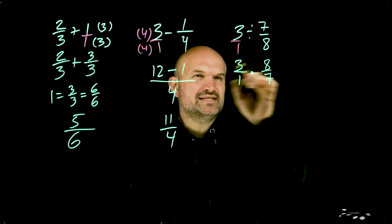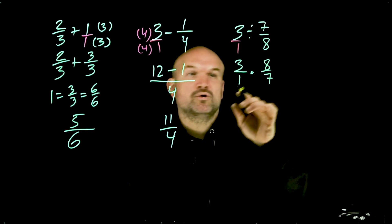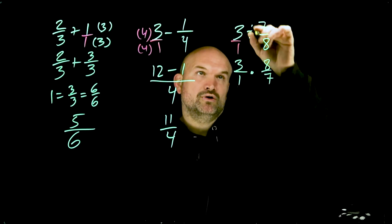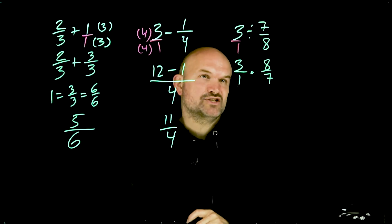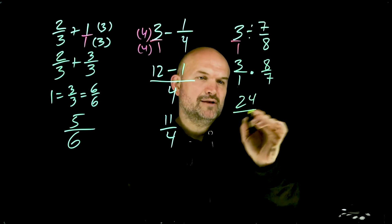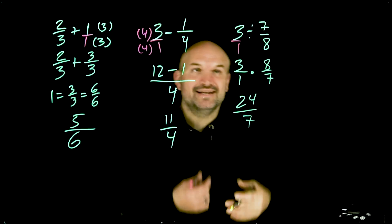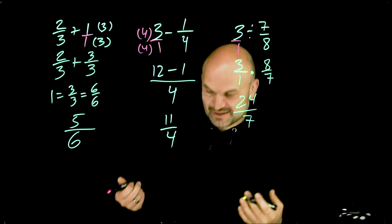It's very important. A lot of times students will reciprocate the first fraction or they will reciprocate both of them. No, we're only reciprocating the second fraction. Now to multiply, I can multiply just straight across. So therefore, that'd be 24/7. And then the last one is also very related to division.